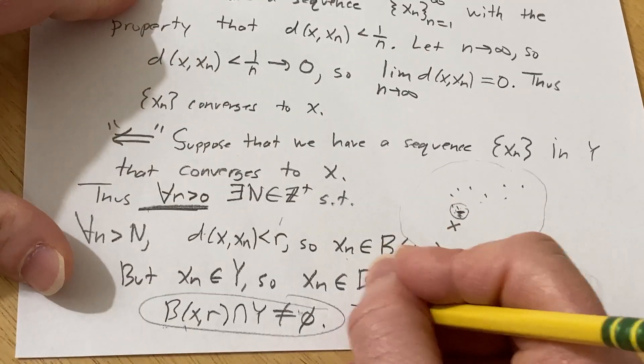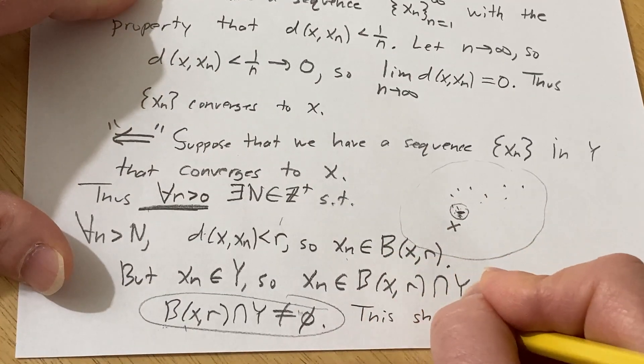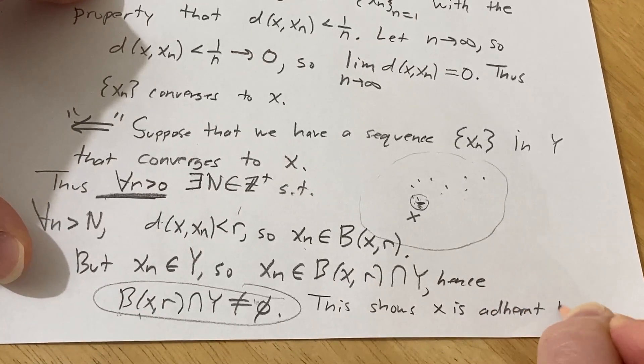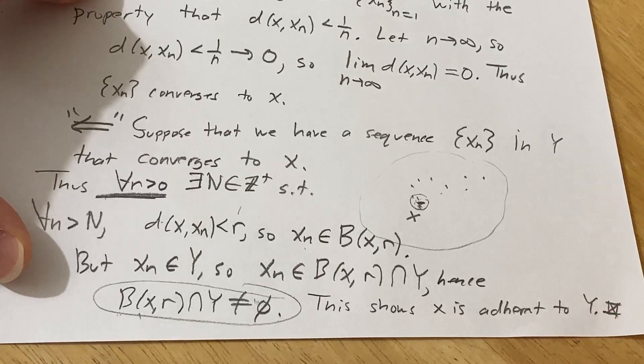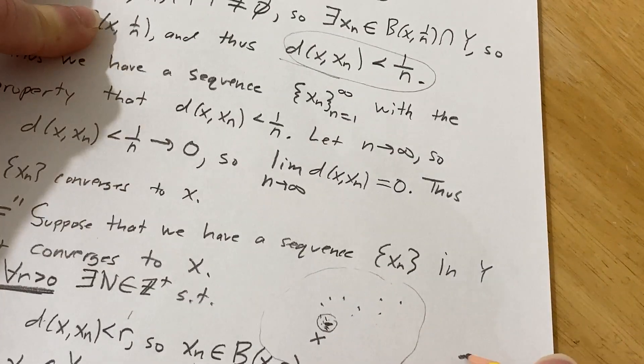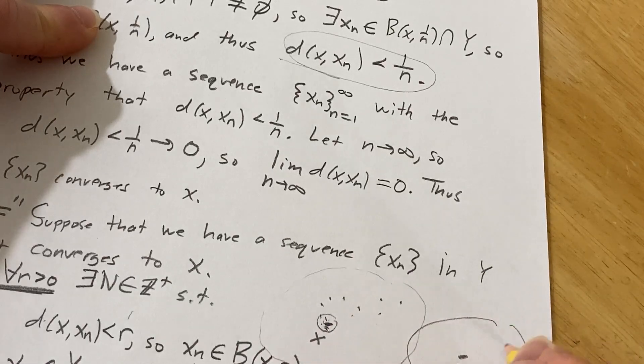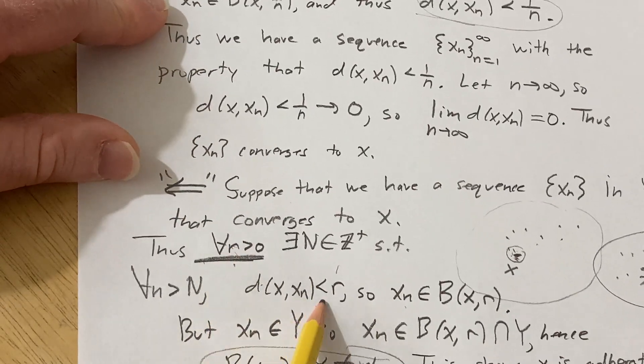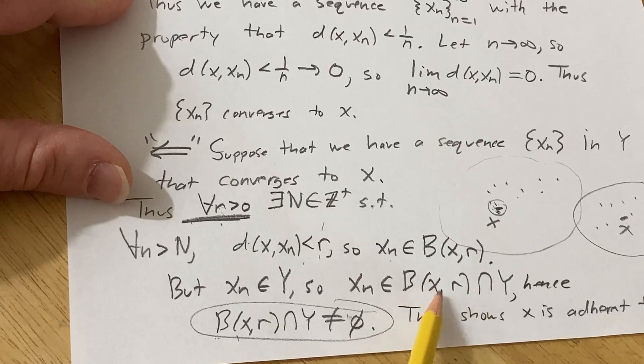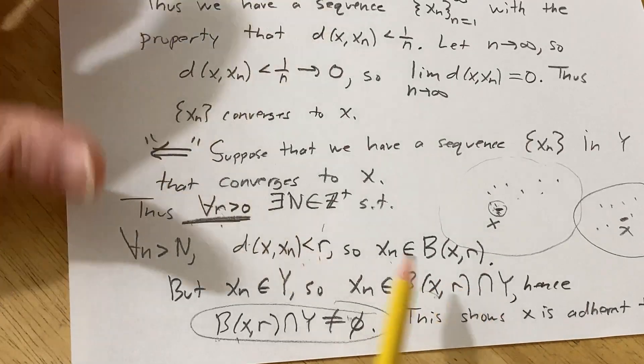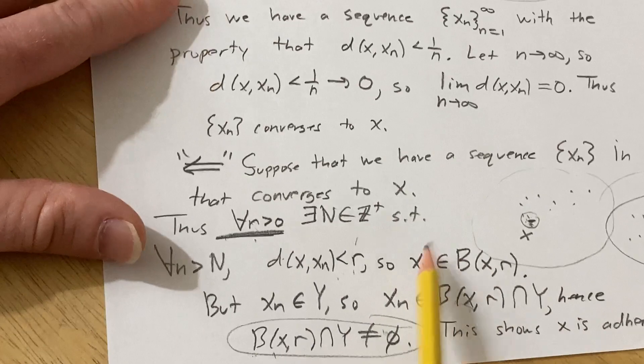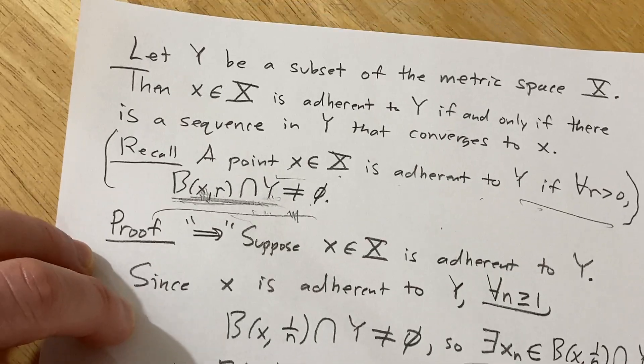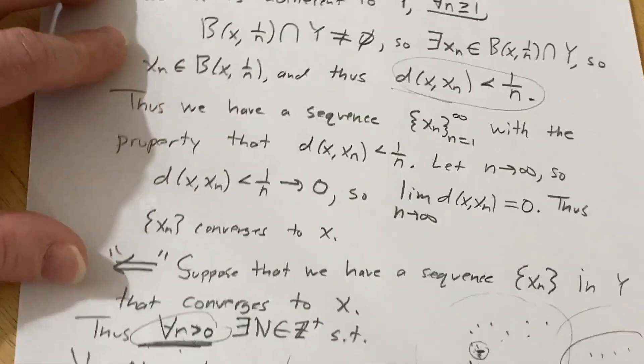I mean, again, intuitively, it should make sense because no matter how close you get, you're always going to have points in this ball. And that's because it's for all r. So you can make r smaller and smaller. So the ball can get smaller and smaller and smaller. If you're wondering about big balls, well, big balls, you just make them big and they're going to contain everything. So it's no real issue. But yeah, pretty cool proof. I hope this video has been helpful to someone who is working on mathematics. Good luck.